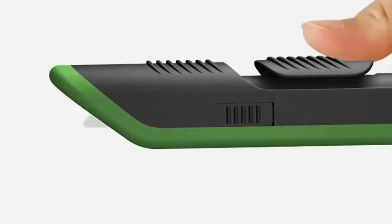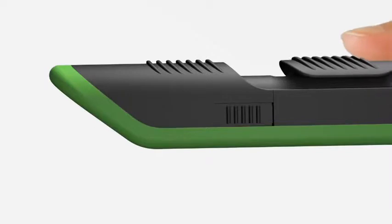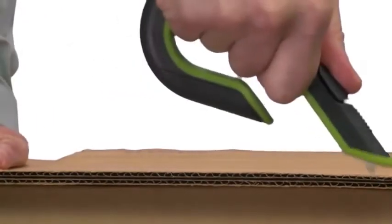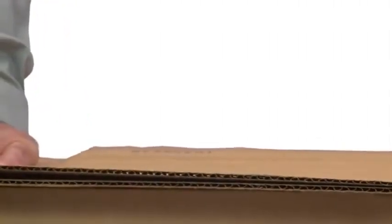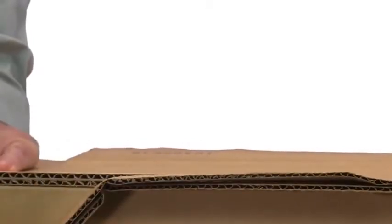The blade depth of this product was designed specifically for double-walled and single-walled corrugated. You don't need a two-inch blade when you're cutting less than a half an inch of corrugated. Less blade means less injuries.